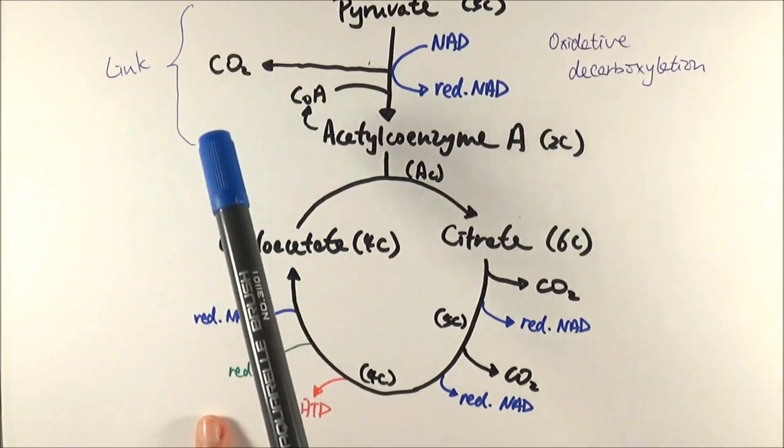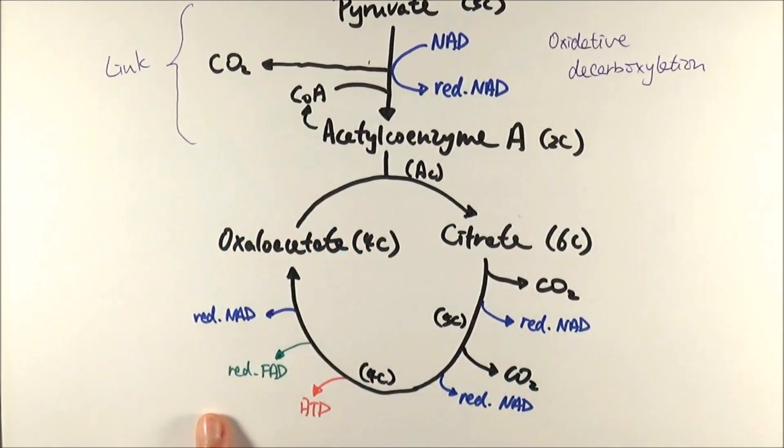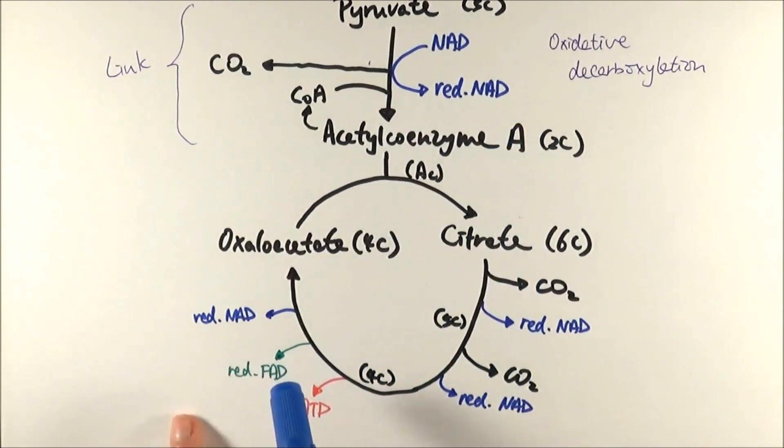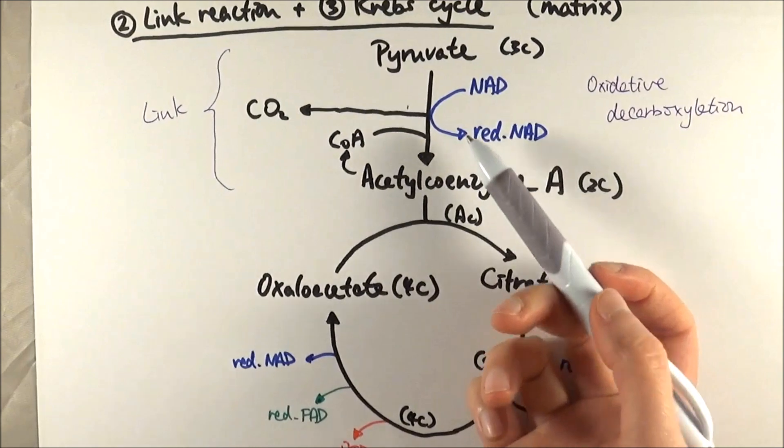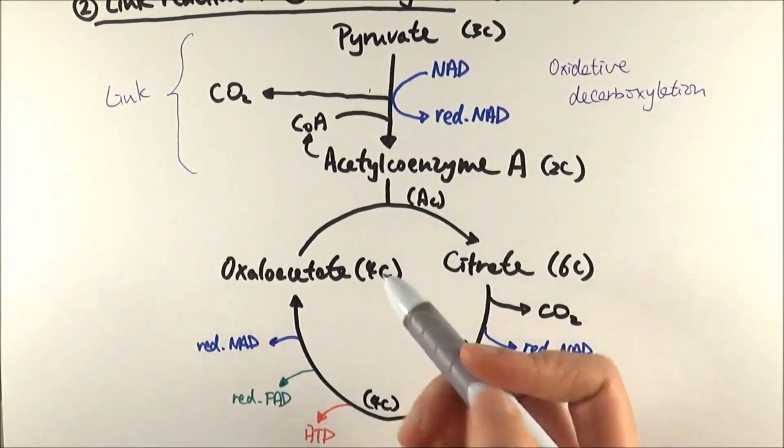Remember that carbon dioxide is just a byproduct which we breathe out. ATP is our final goal, and the reduced NAD and reduced FAD are what we want. They all feed into the final stage, which is oxidative phosphorylation. So we've got our link reaction and then we got our Krebs cycle here.